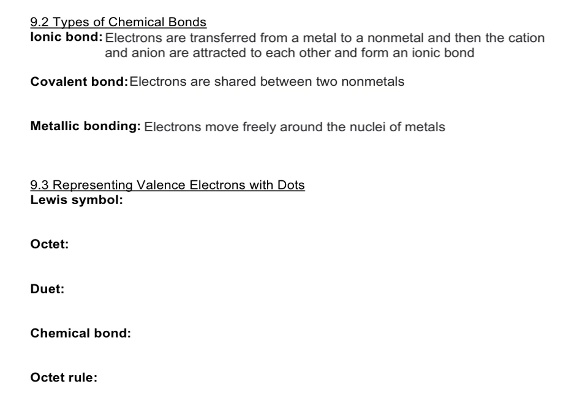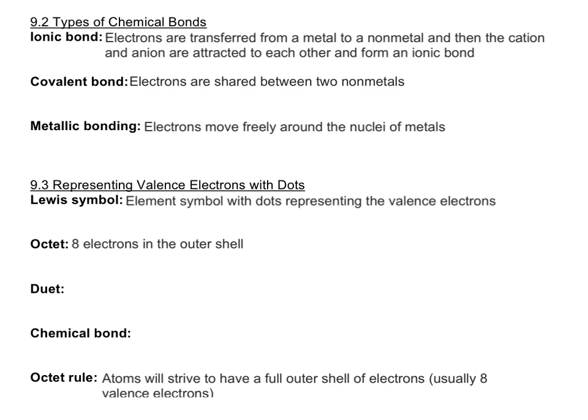So now let's just do a quick review of valence electrons representing those with Lewis symbols. A Lewis symbol is just the symbol of the element, and then there are dots around it that represent the valence electrons. With Lewis symbols, we have the octet rule. So the octet is basically just a rule that says that an atom is happiest when it has eight valence electrons. And so an octet would just be eight electrons in the outer shell. The exception to this is hydrogen and helium. They only have a 1s sublevel, so they can only hold two electrons. So they're happy and complete when they have a duet, which is just two electrons in the outer shell.